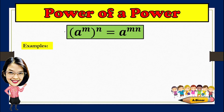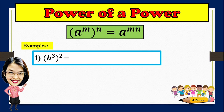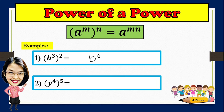Next, let us discuss power of a power, wherein you have to remember that a raised to m, raised to n, is equivalent to a raised to m times n — which means you are going to multiply the exponents. For example, b cubed raised to 2: just simply copy the given base and multiply the exponents, 3 times 2 is 6. For number 2, y to the fourth raised to the fifth power: 4 times 5 is 20, so the answer is y raised to the twentieth power.